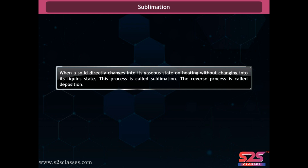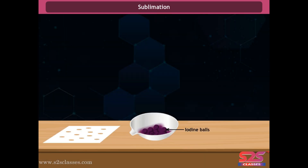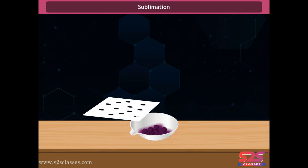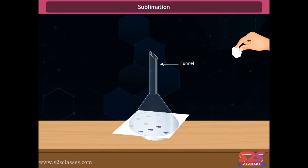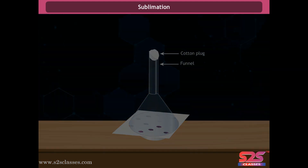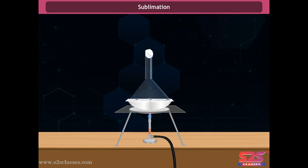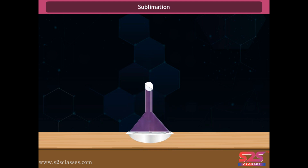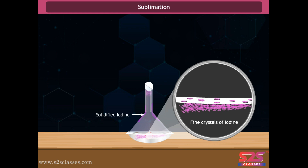Take one gram of iodine balls in a china dish, cover it with an inverted funnel, plug the funnel with cotton, and heat the contents on a Bunsen burner. You observe that some violet vapors are formed inside the funnel. Remove the burner and after some time the vapors get deposited on the sides of the funnel on cooling. There is no liquid formed in the china dish. From this activity we conclude that some solids change into gaseous states without changing into liquid state.